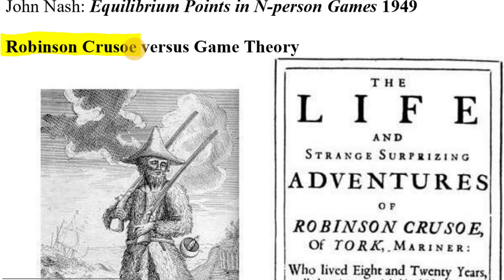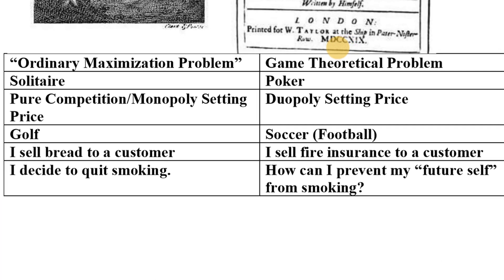Game theory is what happens when you bring more people into the mix. Robinson Crusoe doesn't just decide what he wants to eat — he needs to decide how to allocate his time to collect or produce things he thinks are most valuable that he might trade with other people. So he's not just taking into account his own choices, but also those of others.